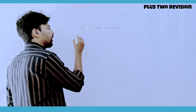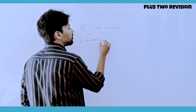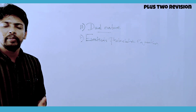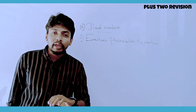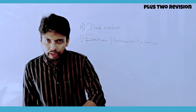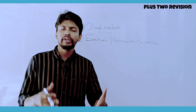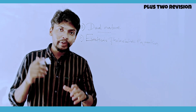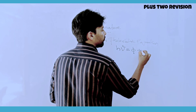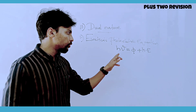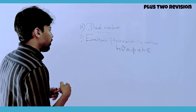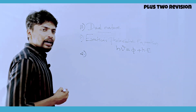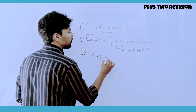The first topic is Einstein's Photoelectric Equation. With Einstein's Photoelectric Equation, we also cover Field Emission and the Photoelectric Effect. The energy equation is: h-nu equals phi plus kinetic energy.